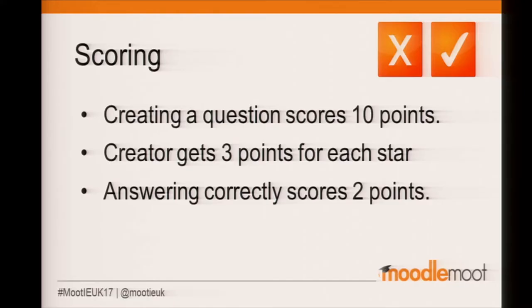By default, when a student creates a question, they get 10 points. The more experienced teachers here may be thinking they can just see students creating junk questions like 'is my teacher dull and boring? Yes or no?' However, a question creator gets three points for each star given when somebody takes a question — up to five stars — and answering a question correctly gets two points. The rating system mitigates the likelihood of students creating junk questions.